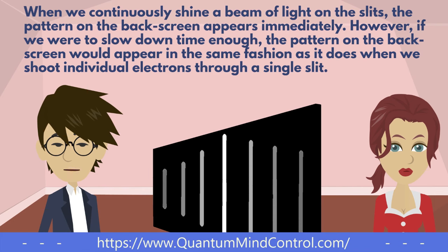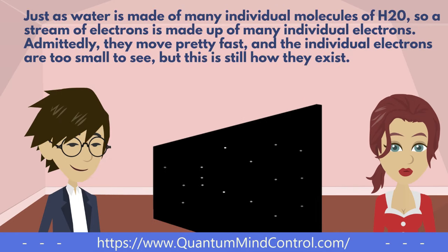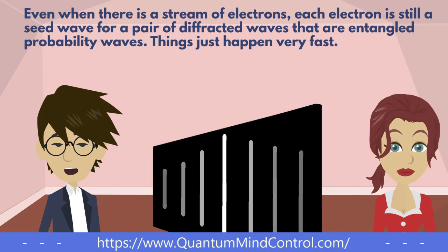When we continuously shine a beam of light on the slits, the pattern on the back screen appears immediately. However, if we were to slow down time enough, the pattern on the back screen would appear in the same fashion as it does when we shoot individual electrons through a single slit. Just as water is made of many individual molecules of H2O, so a stream of electrons is made up of many individual electrons. They move pretty fast and the individual electrons are too small to see, but this is still how they exist. Even when there is a stream of electrons, each electron is still a seed wave for a pair of diffracted waves that are entangled probability waves. Things just happen very fast.